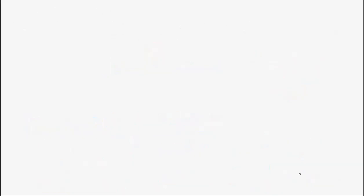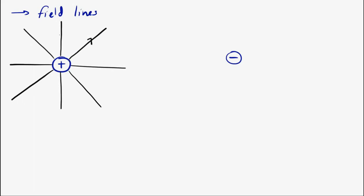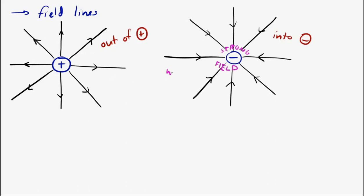The way that we usually depict it is with electric field lines. Electric field lines have a couple rules that they follow. They always point away from positive charges — they always go out of positive charges — and they always go into negative charges. Also, if the field lines are closer together, that indicates you have a stronger electric field at that location. If the field lines are farther apart, that indicates you have a weaker electric field in that location.